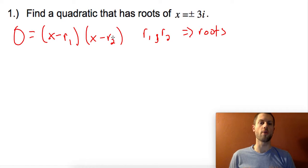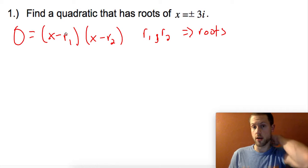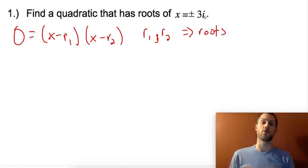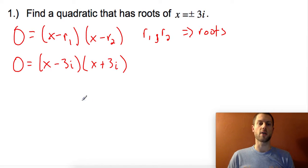Remember, factored form helps us find the roots of a quadratic. We're going to leverage that here since we're starting with the roots. That means the quadratic will be (x - 3i) for the first factor and (x + 3i) for the second factor.